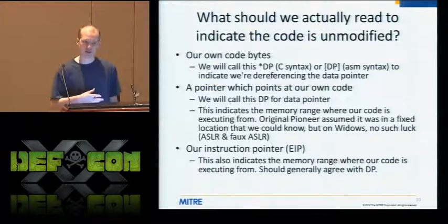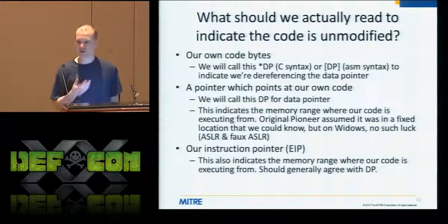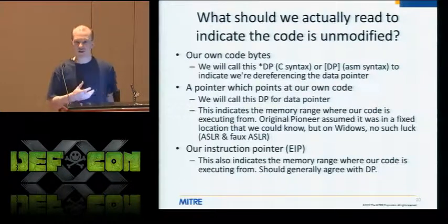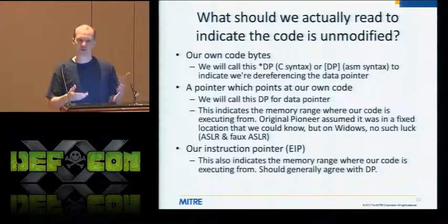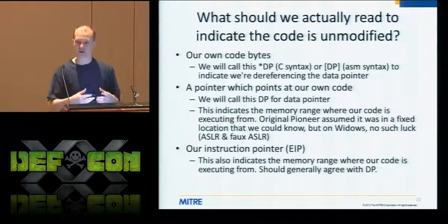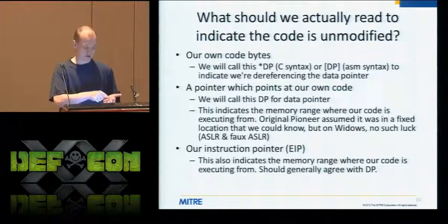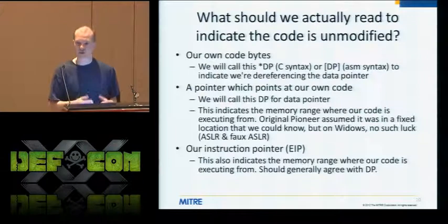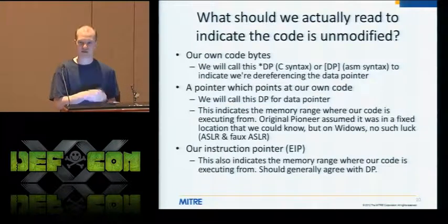Now we want to talk about what actual data we need to attest to in order to say our code is untampered. The first and most obvious thing is we have to read our code itself — we have to measure our code and mix that into the self-checksum. Beyond that, we include the pointer pointing to yourself, because that says something about where in memory your code is actually reading itself. Then we include the instruction pointer, because that says where in memory your code itself is executing. Those two things should match up and be in the same memory range — otherwise you could potentially have an attack.